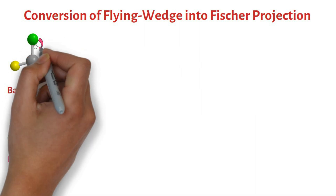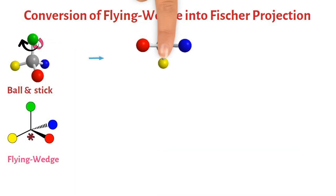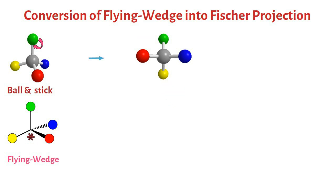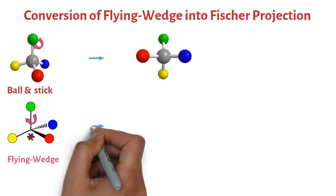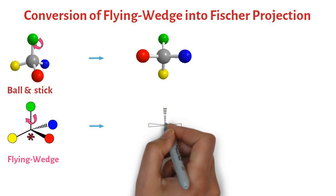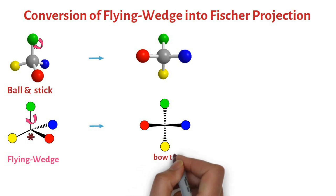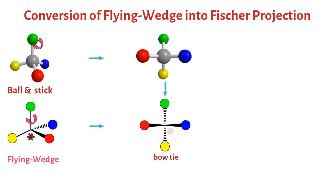If we hold the molecule by this green sphere and rotate in this direction, we get this, where the red and blue spheres project out towards the observer. Green and yellow spheres project away from the observer. The same operation can be executed on this flying wedge projection, which gives this bowtie representation, with red and blue on wedges and green and yellow on dashes. Notice the bowtie is the two-dimensional representation of this rotated ball-and-stick model.